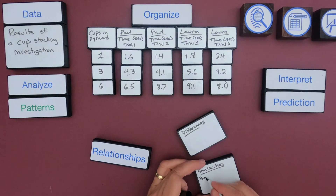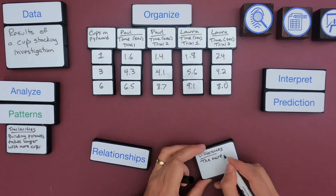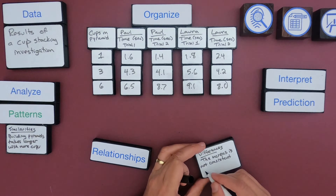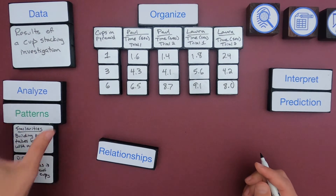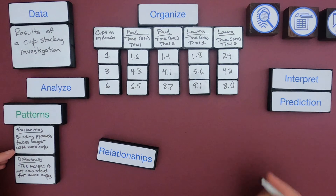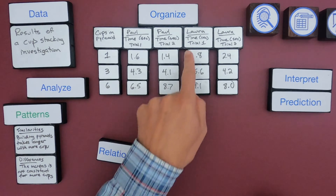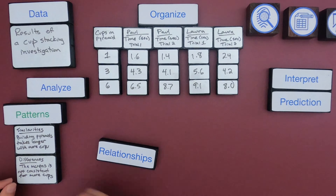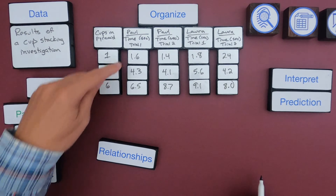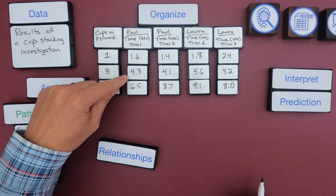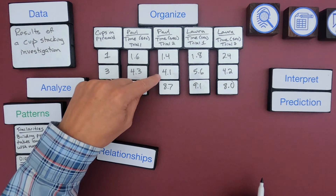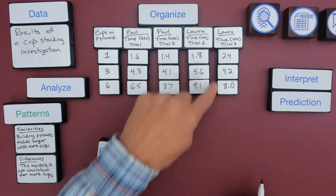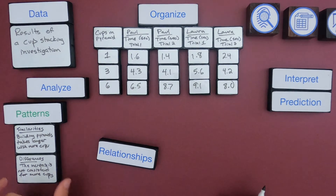The first pattern I notice as a similarity is that in all cases, going from pyramids of one to three to six cups, building pyramids takes longer with more cups. Another pattern is that the increase is not consistent. Looking at the numbers, it goes from one to four to six seconds — so a three-second increase, then a two-second increase; here it's a three-second increase, then a four-second increase. There is an increase, but not a consistent amount.